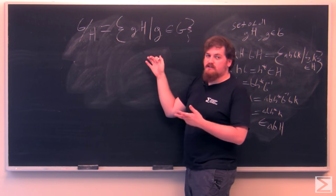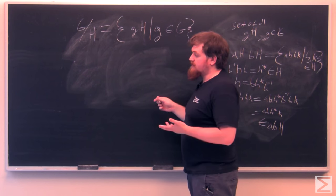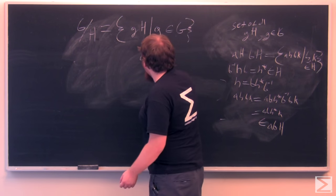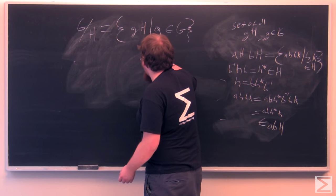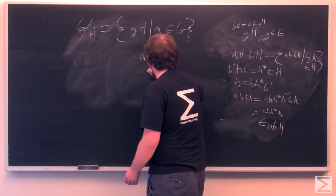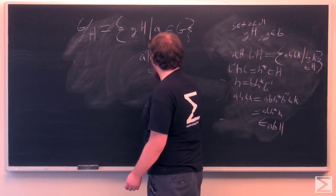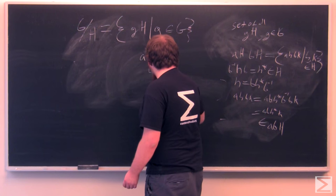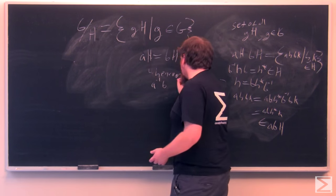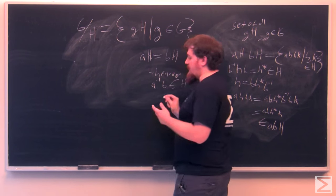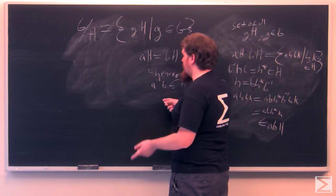Obviously, some of these cosets are going to be the same as each other. Because AH equals BH whenever A inverse B is in H.